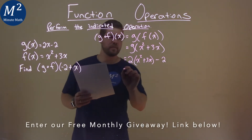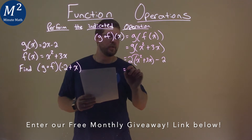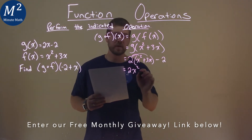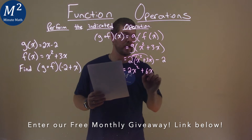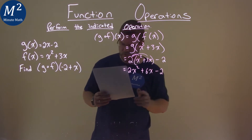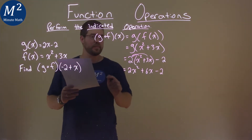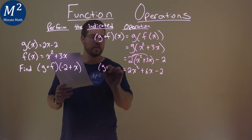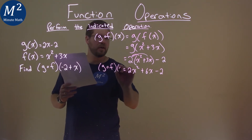Now let's simplify this a bit. 2 times x squared is 2x squared, and 2 times 3x is 6x. Then we subtract a 2 here. So far, so good. And again, this is our g of f of x.